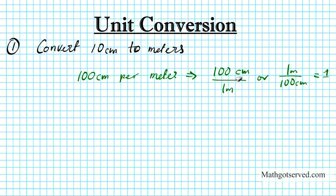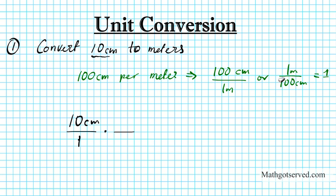So when you divide two quantities of identical magnitude, you always get 1. So let's take a look at this problem. Whatever you're starting with, you write it down as 10 centimeters, put it over 1, and then you're going to multiply by one of these two choices. The question is: do I multiply by this option or do I multiply by this option?